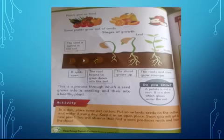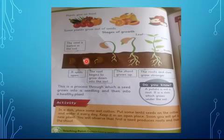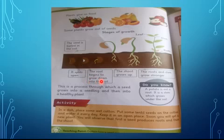The first stage: the seed is buried in the soil. The second stage: the seed splits open. The color changes. The third stage: the root begins to grow down into the soil. Now this root is coming out from the seed and going down into the soil.